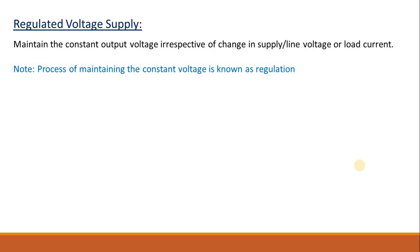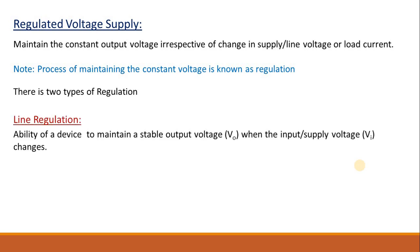From this we can define two types of regulation. The first one is line regulation. Line regulation is the ability of a device to maintain stable output voltage when the input or supply voltage changes. That means we need a constant output — whatever the change in input voltage, the output voltage should remain constant. From this definition we can define line regulation as the ratio of change in output voltage to change in input voltage.